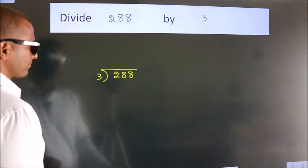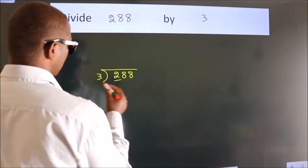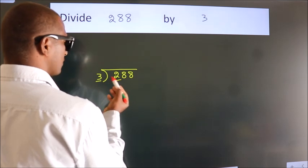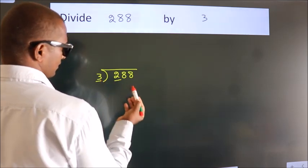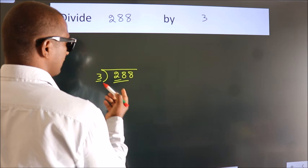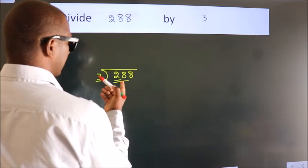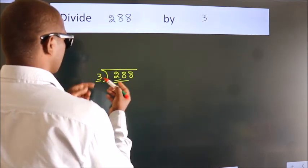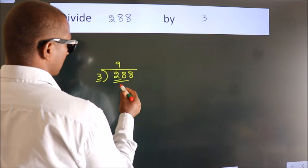Next, here we have 2, here 3. 2 is smaller than 3, so we should take 2 numbers: 28. A number close to 28 in the 3 table is 3 nines, 27.